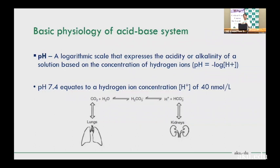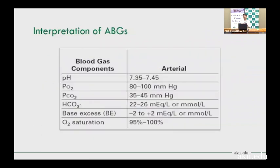Normal ABG values: pH 7.35–7.45; PO2 80–100 mmHg on room air; PCO2 35–45 mmHg (benchmark 40); bicarbonate 20–26 mEq/L (some labs say 22–25); base excess minus 2 to plus 2.5; oxygen saturation 95–100%.